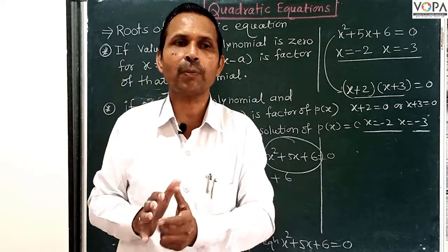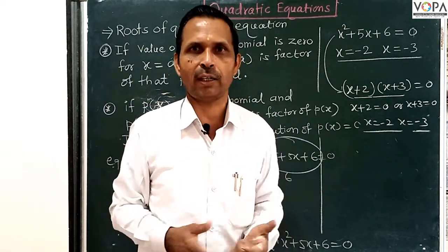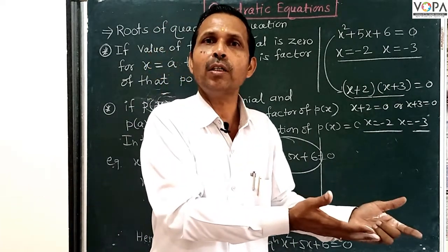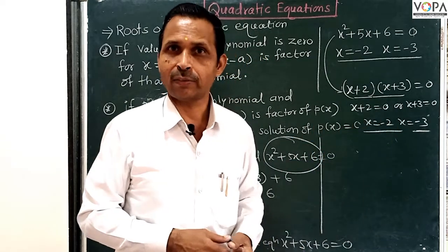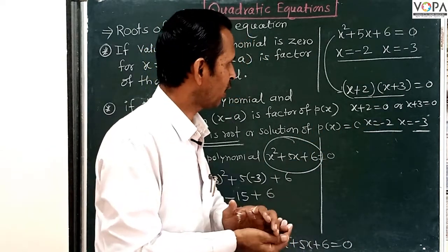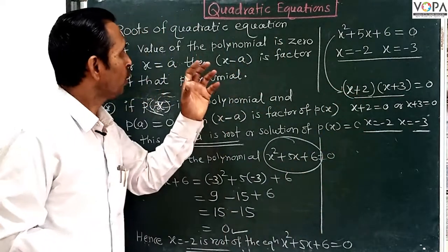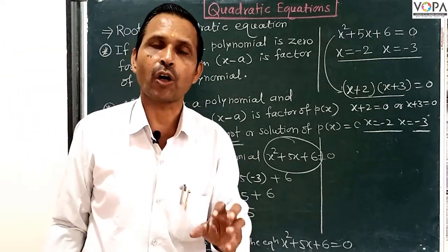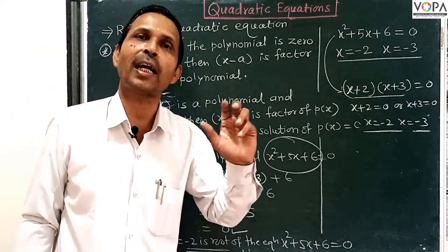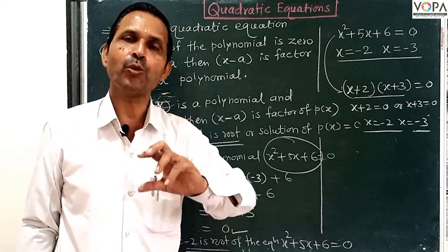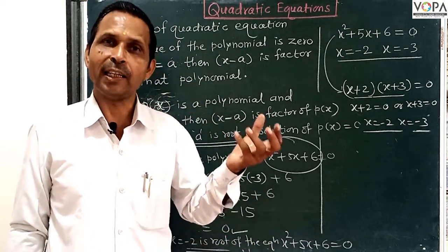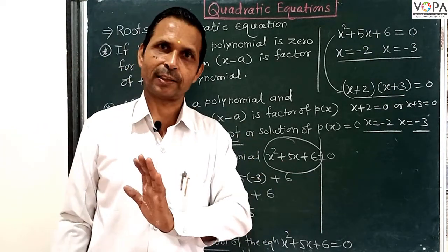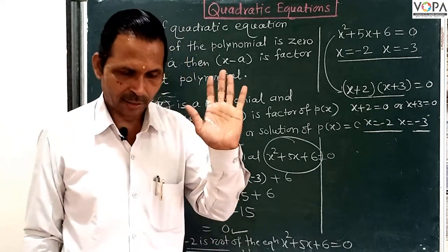What is the difference between the solution of a simultaneous equation and the solution of a quadratic equation? The solution of a quadratic equation means the values of the variable for which the given equation is satisfied — that is, when we put the value of x into the equation, we get LHS equal to RHS.